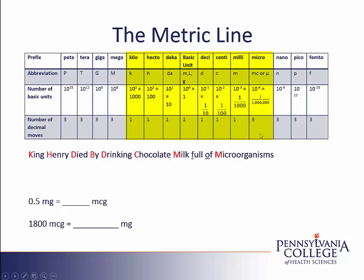In between milli and micro, we see that there are three decimal moves, because a milligram is one thousandth of a gram, but a microgram is one millionth of a gram. So these are more than one decimal move apart, and the words 'full of' represent unnamed positions between milli and micro. At the bottom end of the metric line, from micro to nano is another three moves. There are also common units at the top of the metric line, but these are larger than what we use in healthcare.